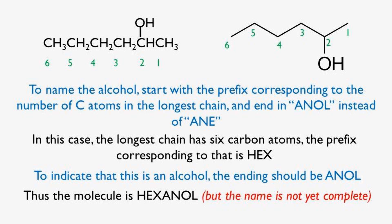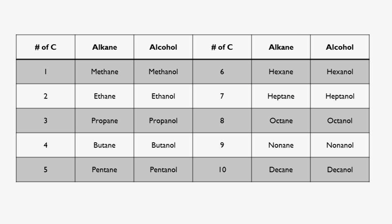However, the name is not yet complete. Here's a list of the number of carbon atoms versus the name of the alcohol: 1 carbon atom is methanol, 2 is ethanol, 3 is propanol, 4 is butanol, 5 is pentanol, 6 is hexanol, 7 is heptanol, 8 is octanol, 9 is nonanol, 10 is decanol, and so on and so forth.